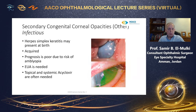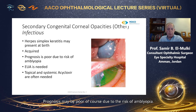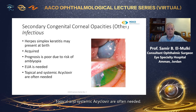Herpes simplex keratitis may present at birth. Infection may be acquired during passage through the birth canal; however, in some cases the mother has been found negative on microbiological testing. Prognosis may be poor due to the risk of amblyopia. Examination under anesthetic is needed to establish diagnosis by corneal scrapings. Topical and systemic acyclovir are often needed.